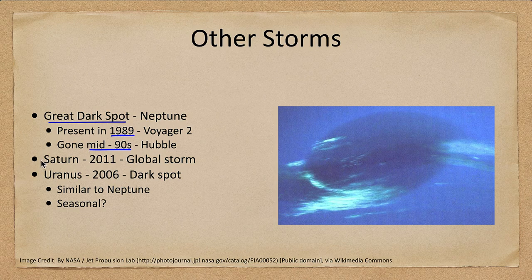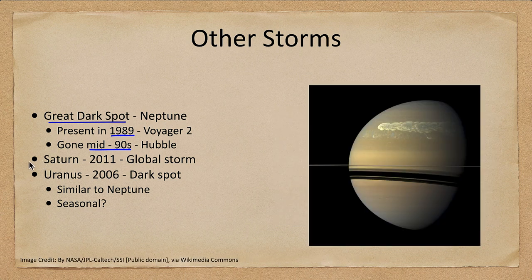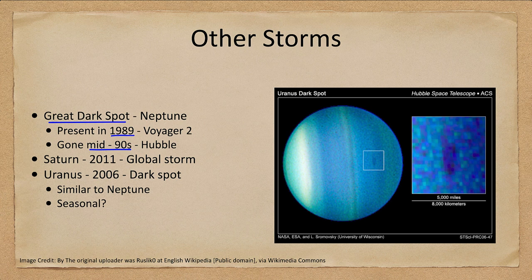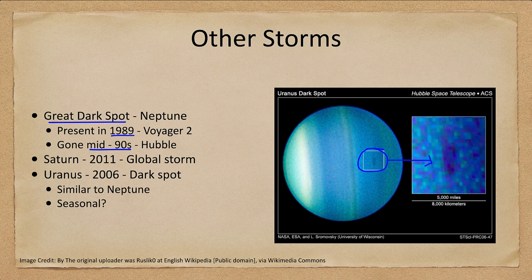Large storms occur on all of the giant planets. Saturn has had global storms stretching across the planet. Uranus also has a dark spot similar to Neptune's, though seeing any structure on Uranus requires a highly processed image. Uranus's extreme axial tilt creates very unusual seasons — for several decades one pole points toward the sun, then the equatorial regions take their turn, and then the other pole. This tilt may contribute to its atmospheric activity.